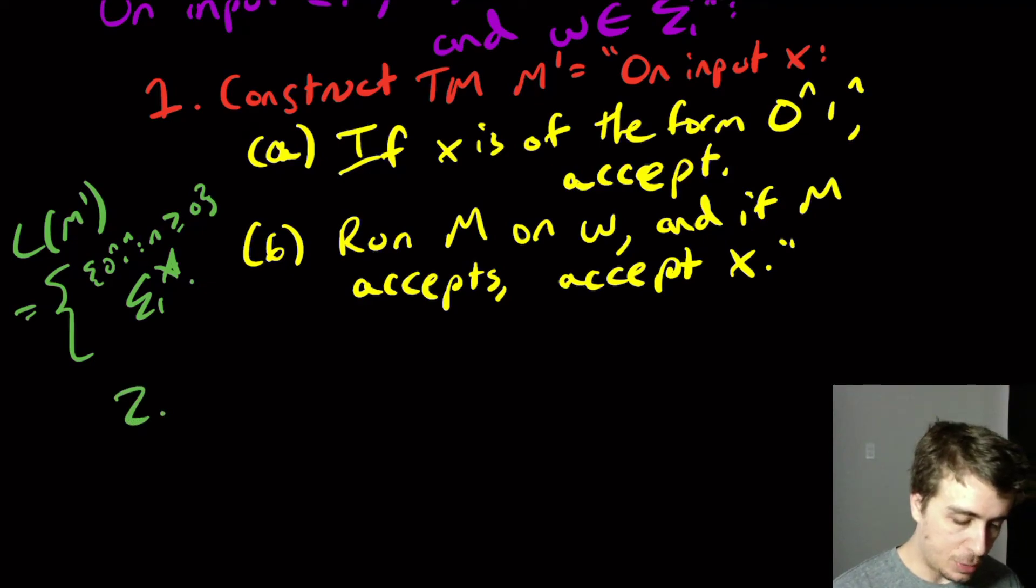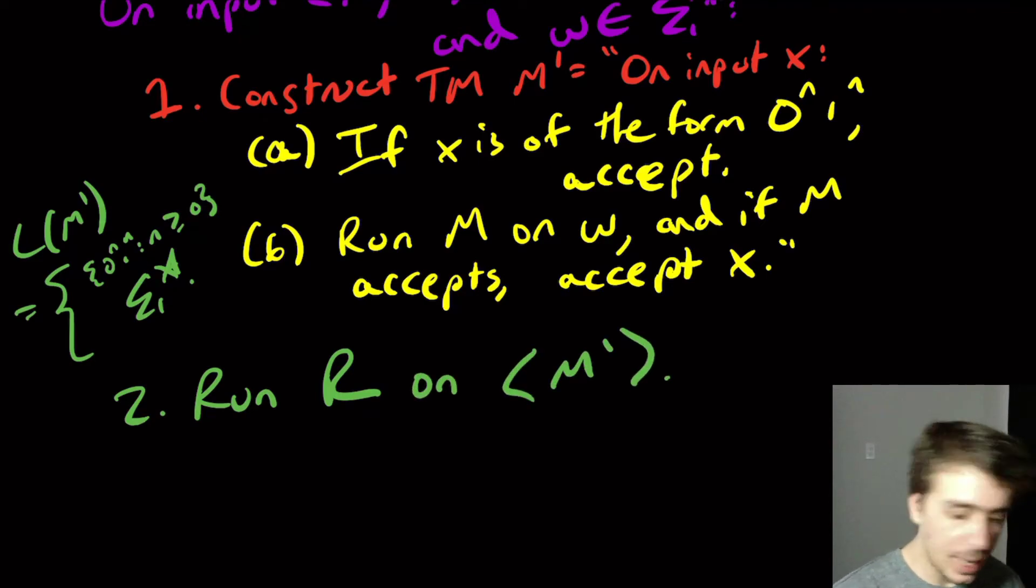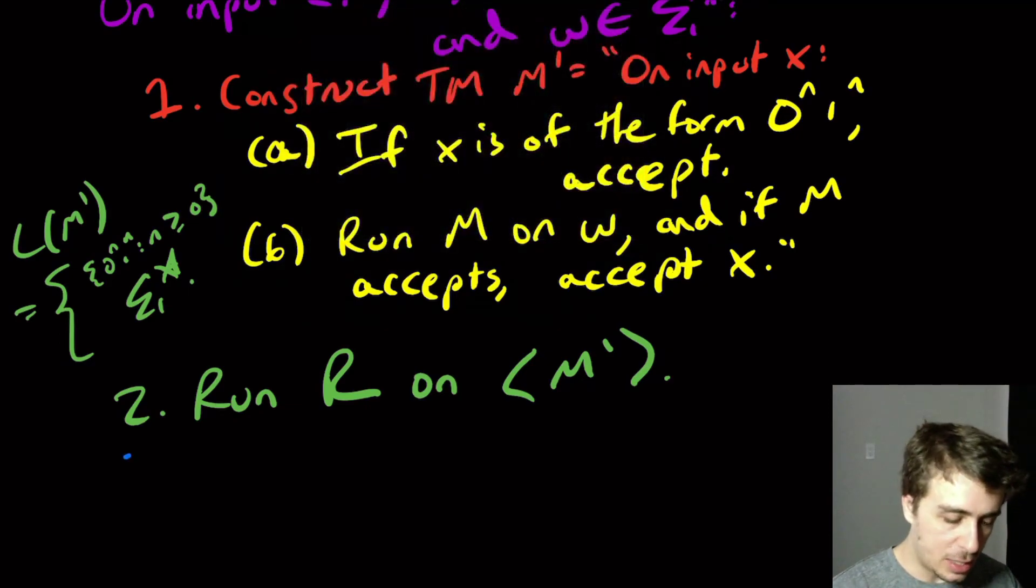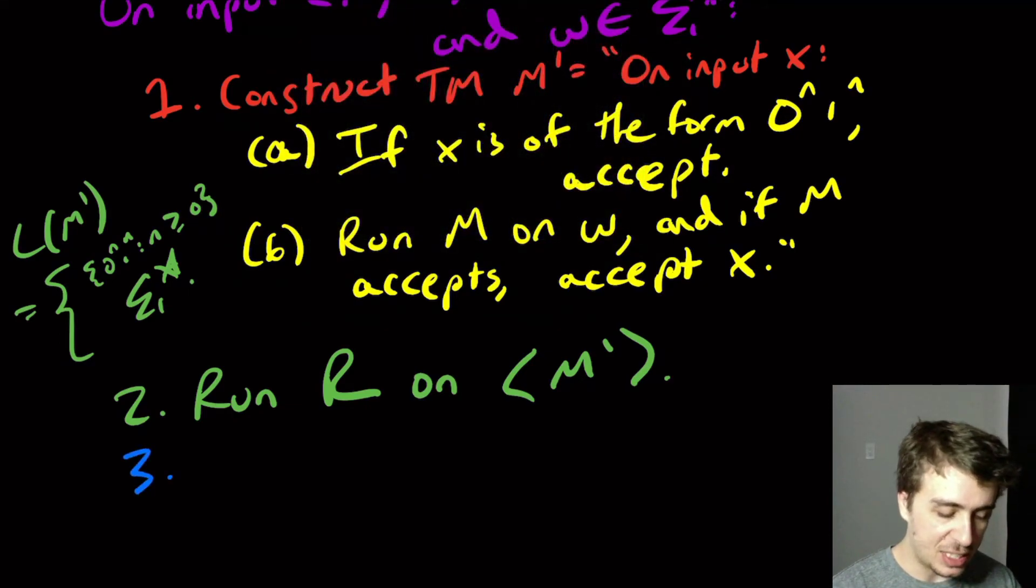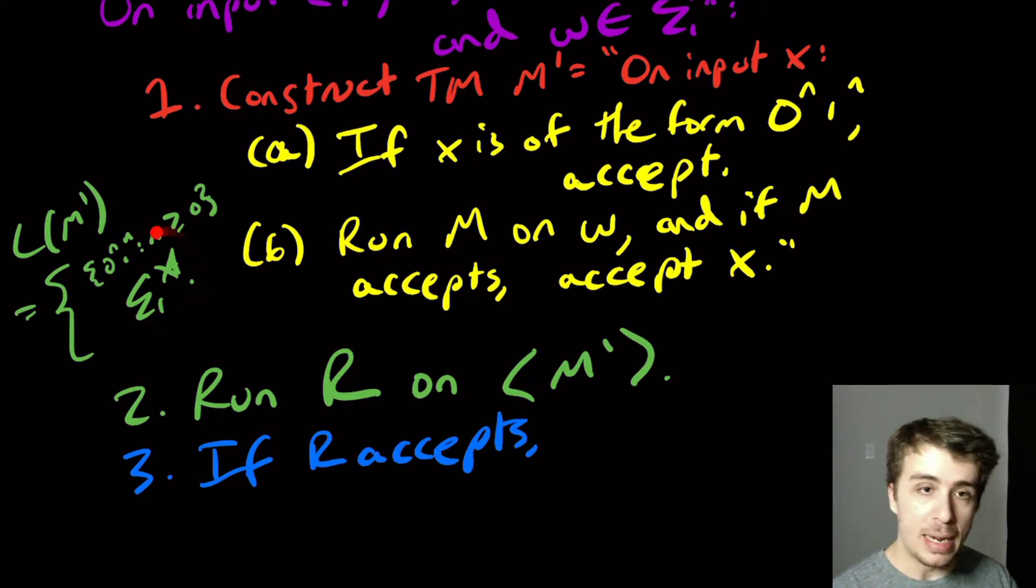So at step two, we're going to run the supposed decider R on that new machine that we just made. Since it's supposedly a decider, it must accept or reject. If R accepts, then that means it is regular, so it's in this case.